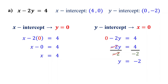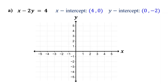Now that we have our intercepts, the next step is to plot them on the coordinate plane. Plot the x-intercept at 4 comma 0. Plot the y-intercept at 0 comma negative 2. Finally, draw a line through these points. This is the graph of the equation.